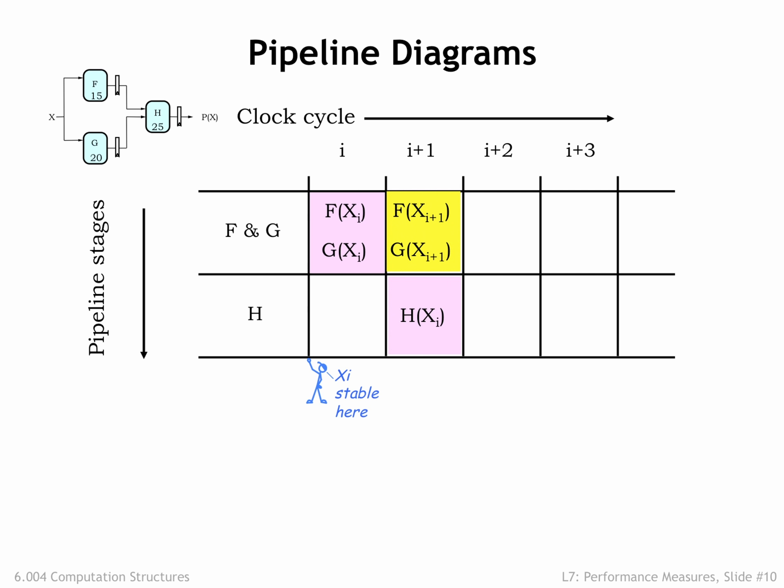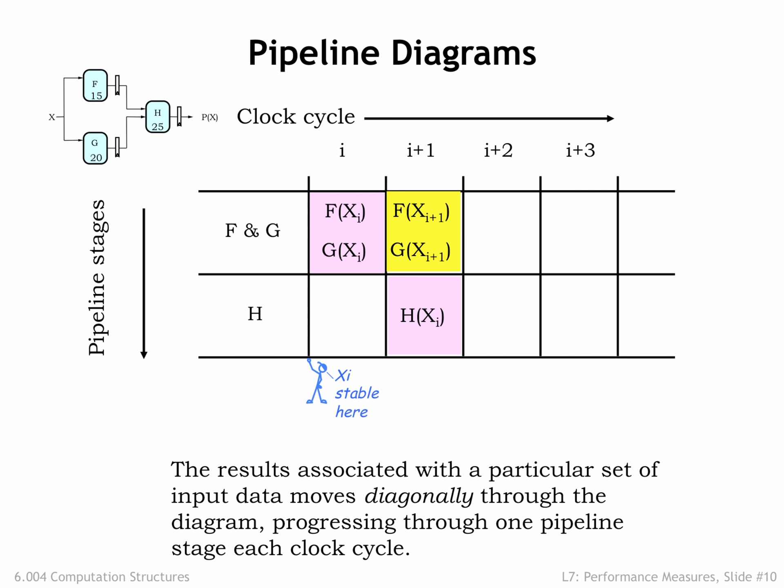Then in cycle i+1, H uses the captured values to do its share of the processing of x_i. And meanwhile, the F and G modules are working on x_(i+1). You can see that the processing for a particular input value moves diagonally through the diagram, one pipeline stage per clock cycle. At the end of cycle i+1, the output of H is captured by the final pipeline register, and is available for use during cycle i+2. The total time elapsed between the arrival of an input and the availability of the output is two cycles.